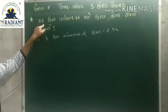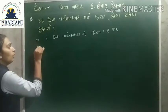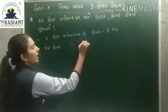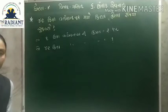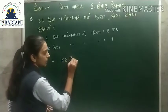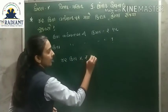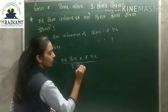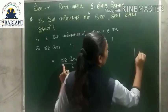વિદ્યાર્થી મિત્રો, એ જ રીતે બીજો એક દાખલો વધુ સમજીએ. 42 કિલોગ્રામ રબ્બર. તો 42 કિલોગ્રામ વર્તમાન પત્ર ની કિંમત બરાબર કેટલી? હવે ગણતરી કરીએ. 42 કિલોગ્રામ ગુણ્યા રૂપ્યા પંદર છેદ માં એક કિલોગ્રામ. ગુણાકાર કરવો પડશે.